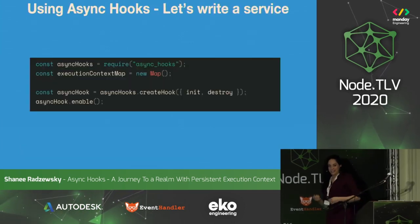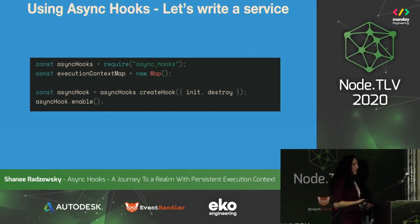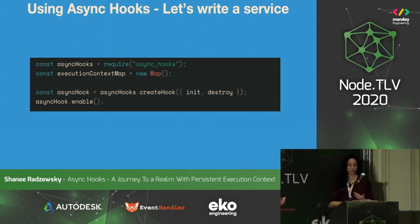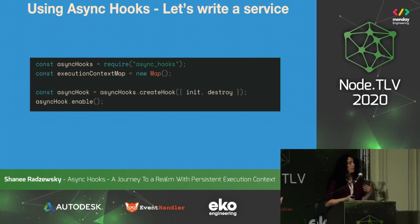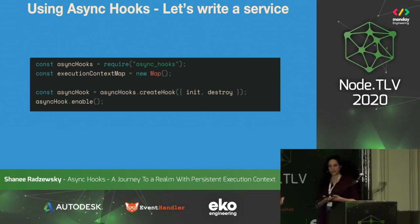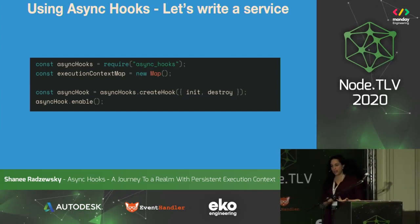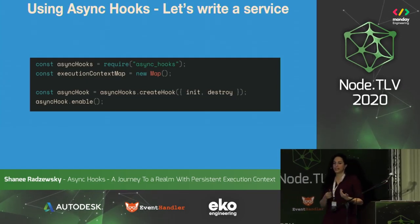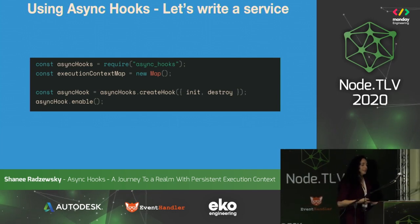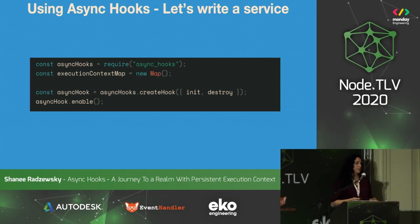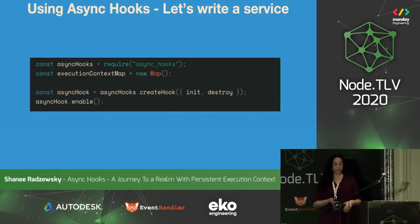The first thing we want to do is require async hooks. We want to create our map, and we want to create an instance of async hooks by calling createHook and passing the callbacks we implement into it — here we've chosen to implement init and destroy. The last thing we do is just enable it, which means we're now listening and all these callbacks are actually going to be injected into these lifecycle events.